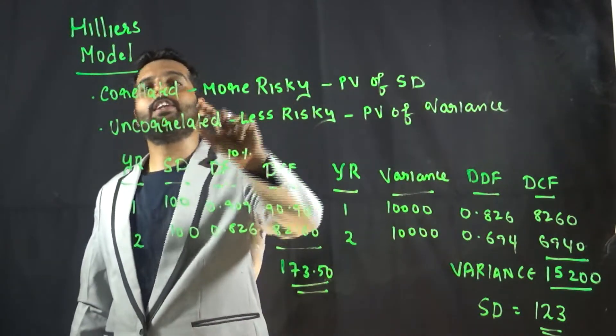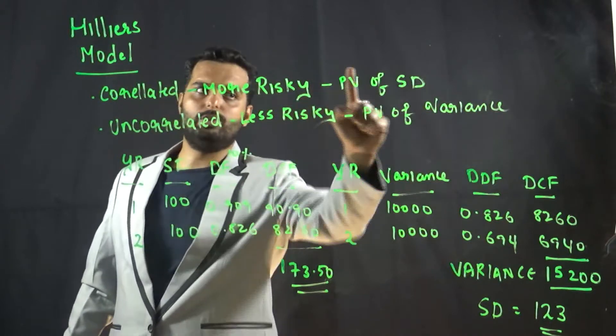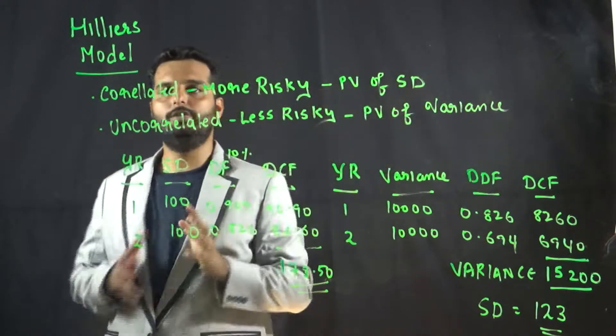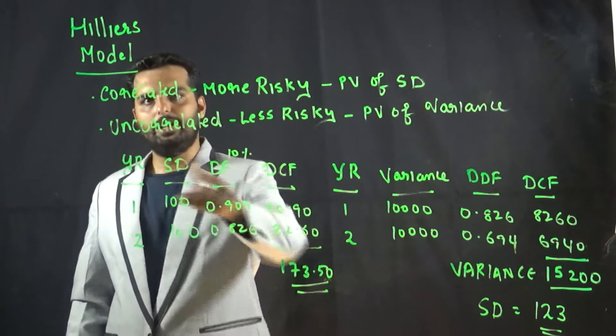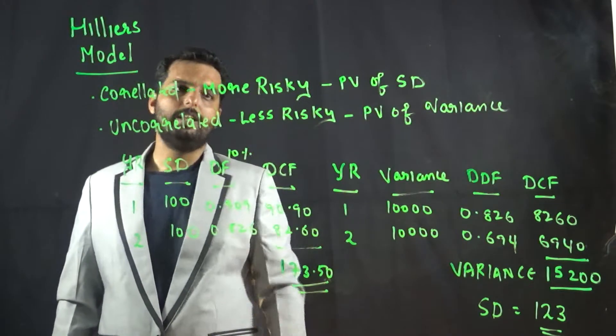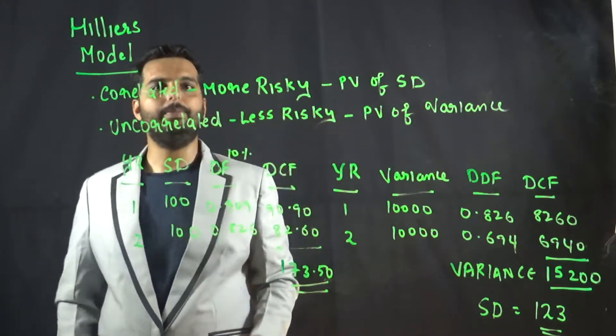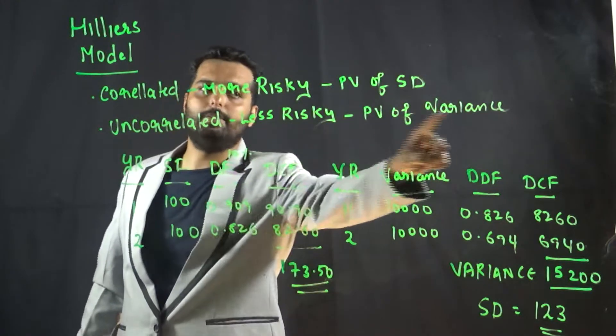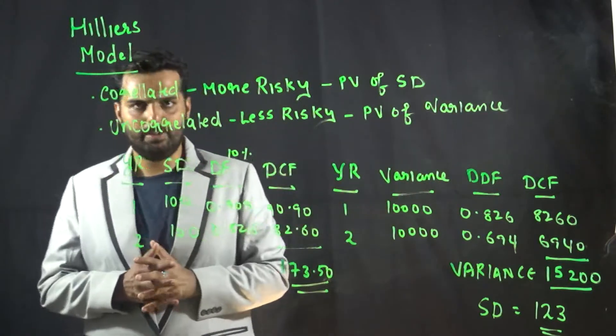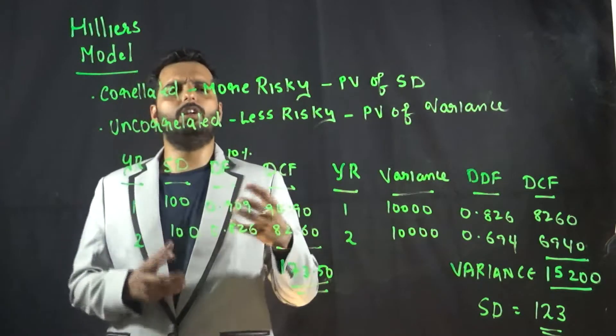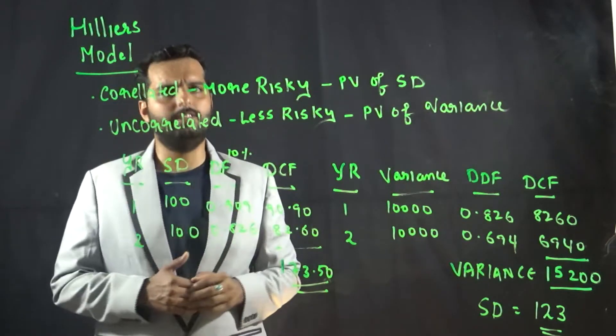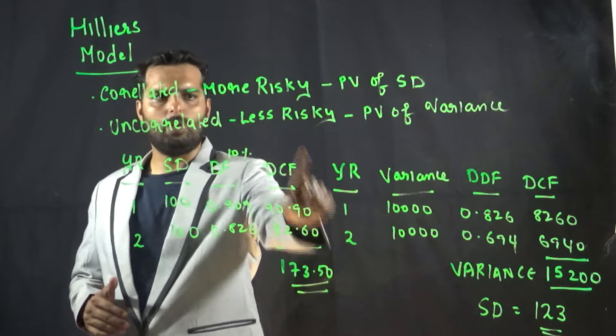If correlated cash flows are more risky, we should take the present value of standard deviation. But if cash flows are uncorrelated, then it is said to be less risky, and once it is less risky, we should take the present value of variance.